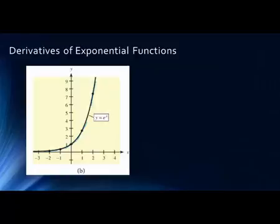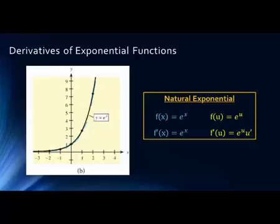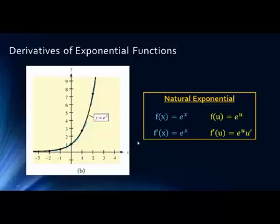Here we have a graph of the natural exponential function, which uses Euler's constant as the base. Everywhere we have points along the graph, the tangent line — shown in light blue — almost disappears into the graph right at the point. This identifies an interesting property: if the function is e to the power of x, the derivative is actually the same as the function. So the slope at the point is equal to the value of the function.